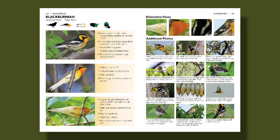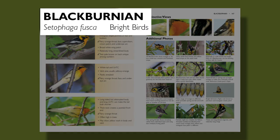Here we're looking at Blackburnian Warbler. At the top of the left page, we have the bird name and Latin name, and the season and age or sex that is being shown. For many birds, this line will just say "all birds," because they don't change much in plumage between individuals.